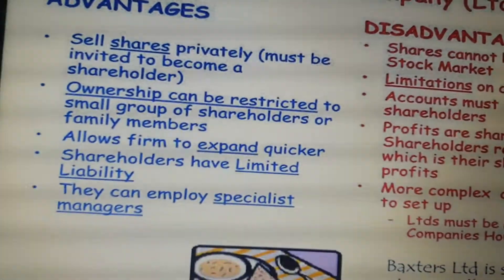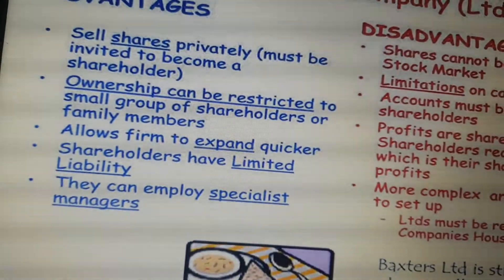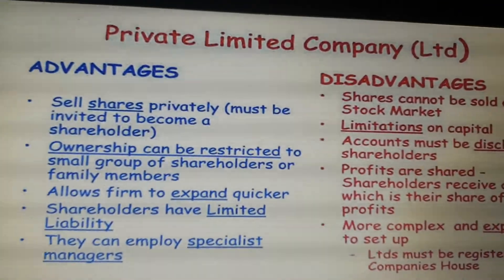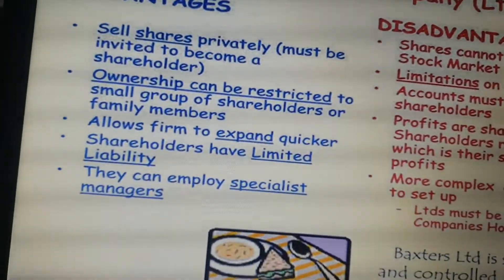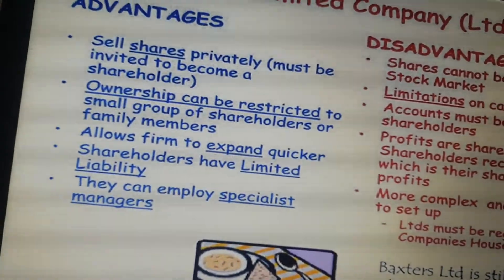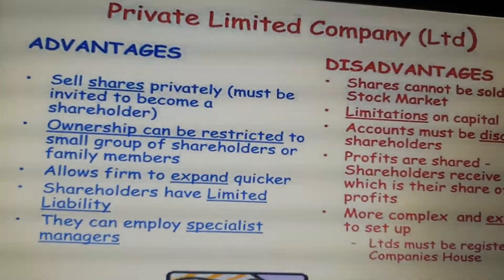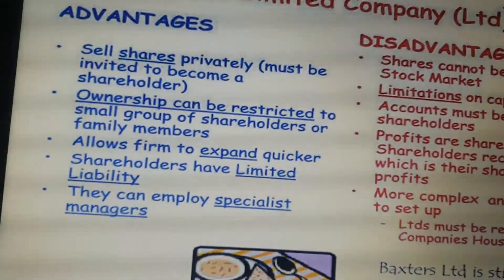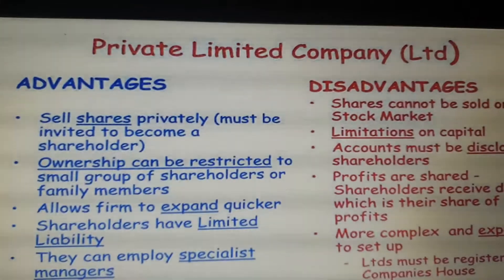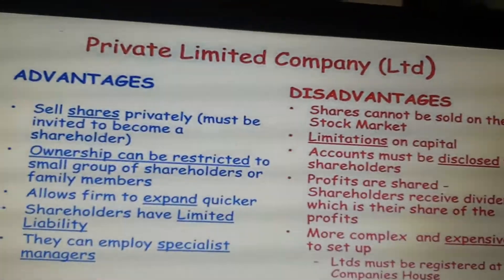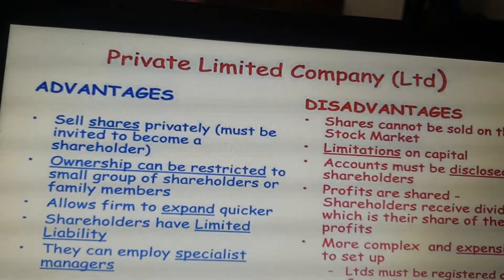Advantages of private limited company: they can sell shares privately, ownership can be restricted, and shareholders have limited liability — meaning if the business fails, shareholders only lose the money they invested. Disadvantages: cannot sell shares to the public, and there are limitations on capital.